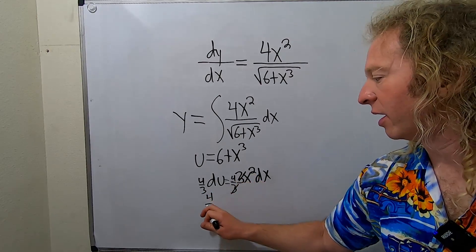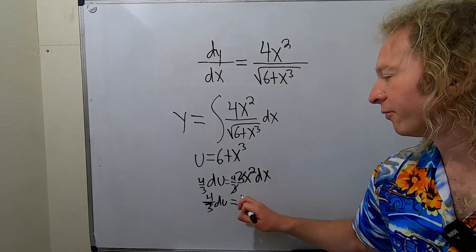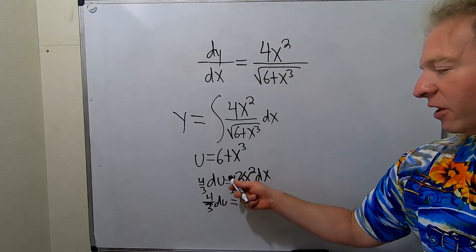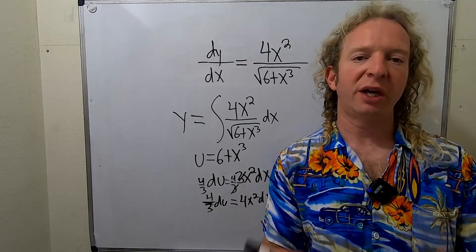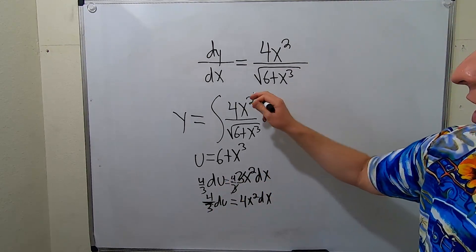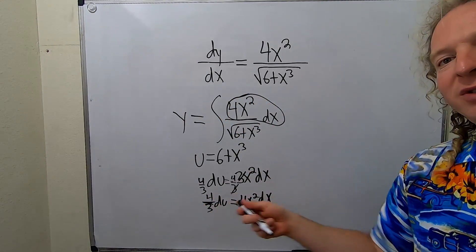It goes away. So you get 4 thirds du equals 4x squared dx. So basically you get rid of the 3 by putting a 4 thirds there. Because you want to get rid of the 3 and also you want to multiply by 4. So now we got it. We got this. This is how pros do it. So this is 4 thirds du.